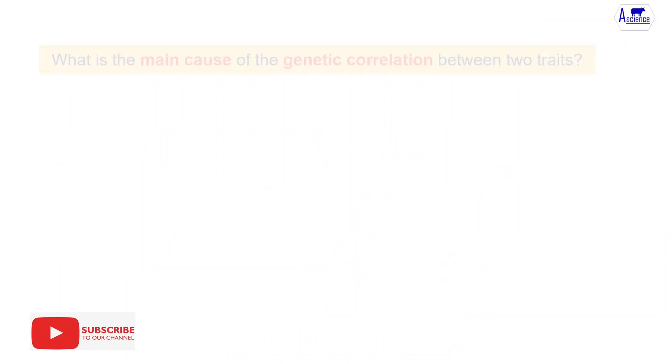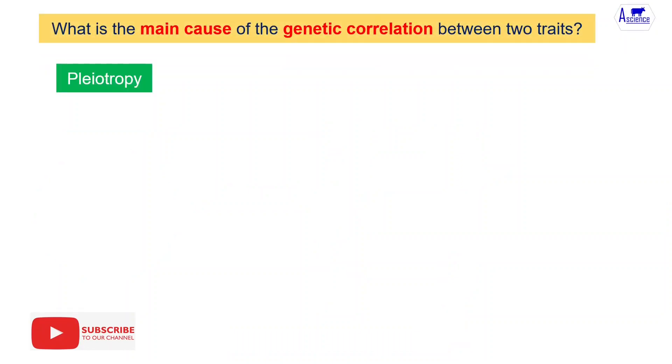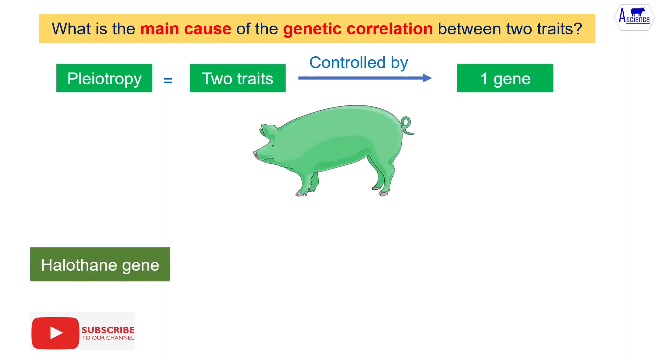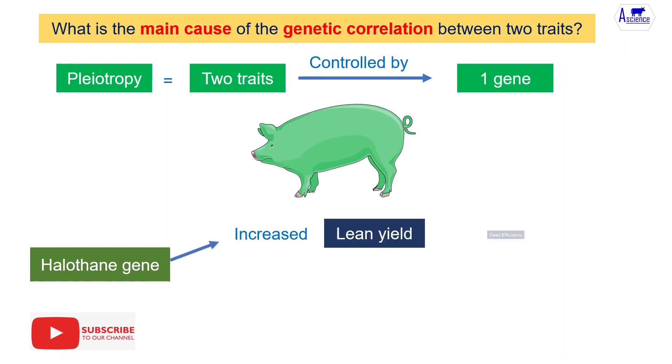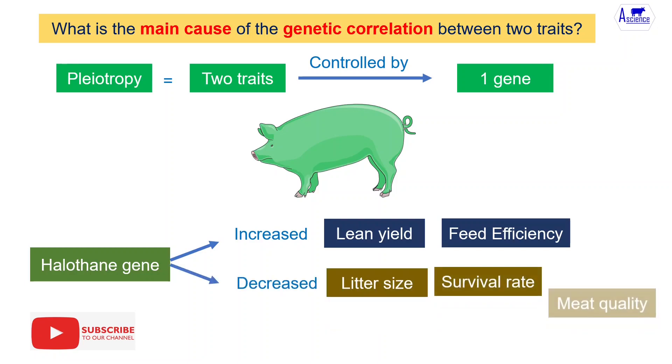The main cause of genetic correlation is pleiotropy, which means that two traits are controlled by a same gene. For example, halothane gene in swine causes increased lean yield and feed efficiency but also decreased litter size, survival rate, and meat quality.